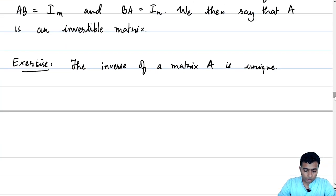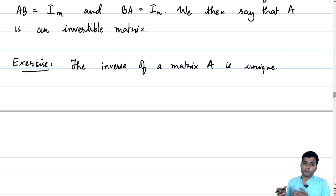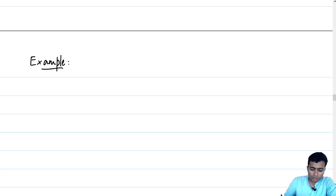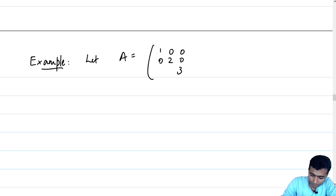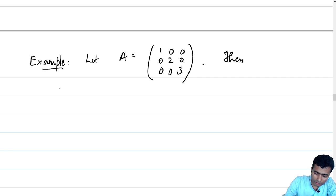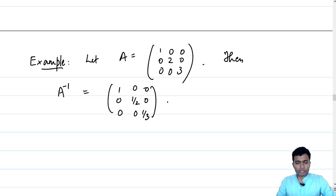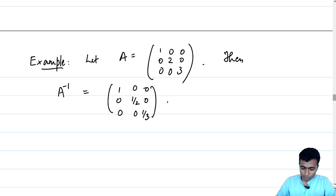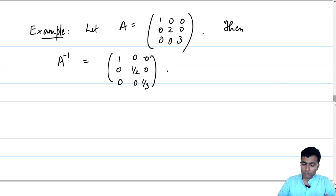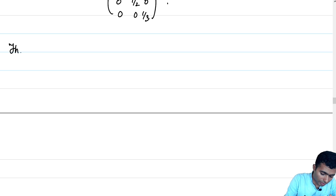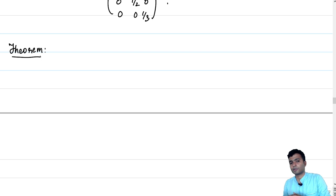Our goal is to show that an invertible linear transformation has an invertible matrix associated to it. Let me give an example for the sake of completion. Let A be a diagonal matrix with entries 1, 2, 3. Then A-inverse is the diagonal matrix with entries 1, 1/2, 1/3. This is a familiar concept from high school. Let me jump directly into the theorem which captures the relationship between invertible linear transformations and invertible matrices.